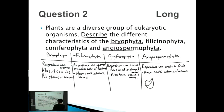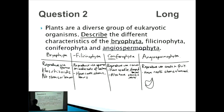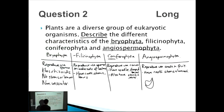For extra marks: Bryophyta are non-vascular, so they lack xylem and phloem. Additionally, Angiospermophyta reproduce using ovaries, which produce seeds that develop into fruit. These additional points go beyond the eight basic marks and show deeper understanding.